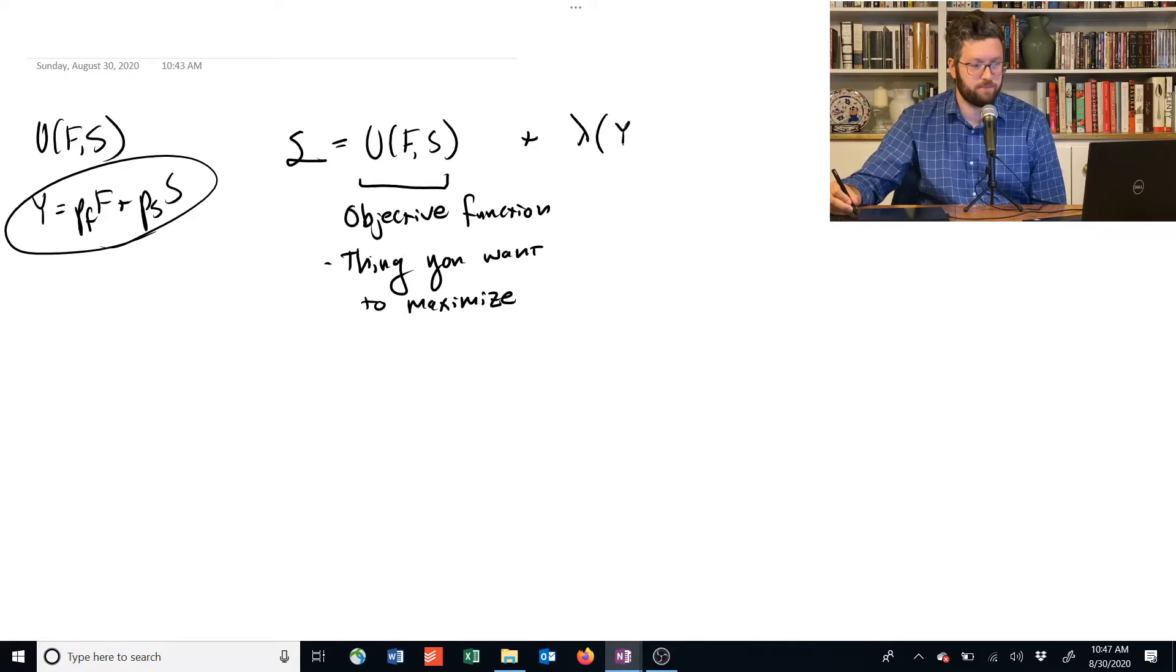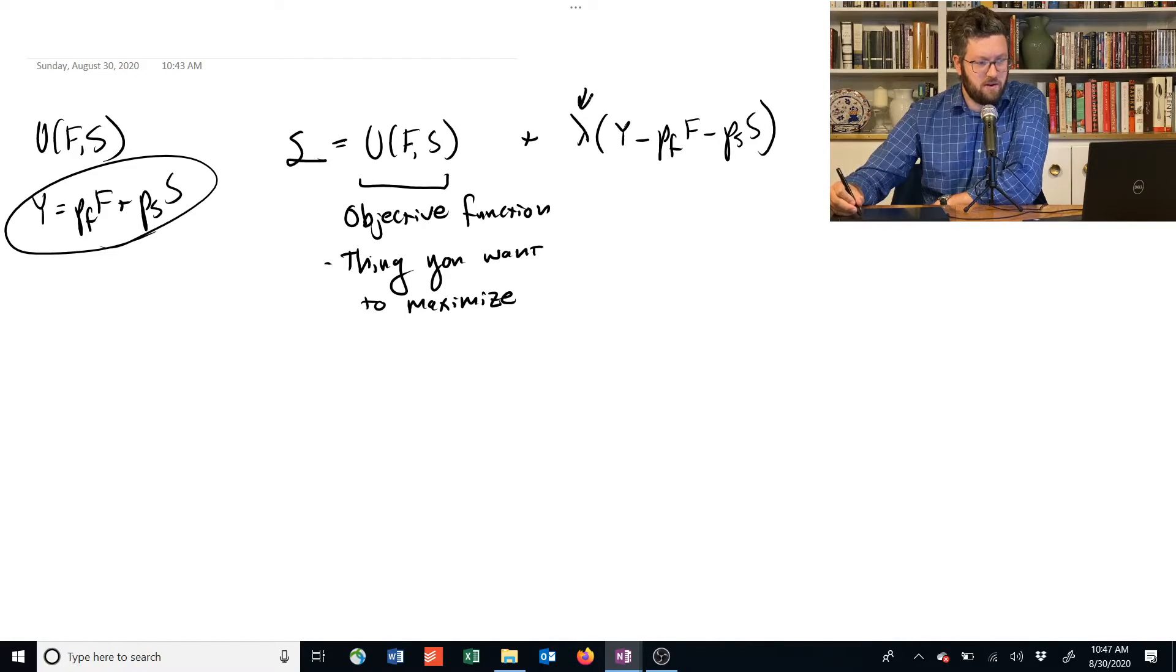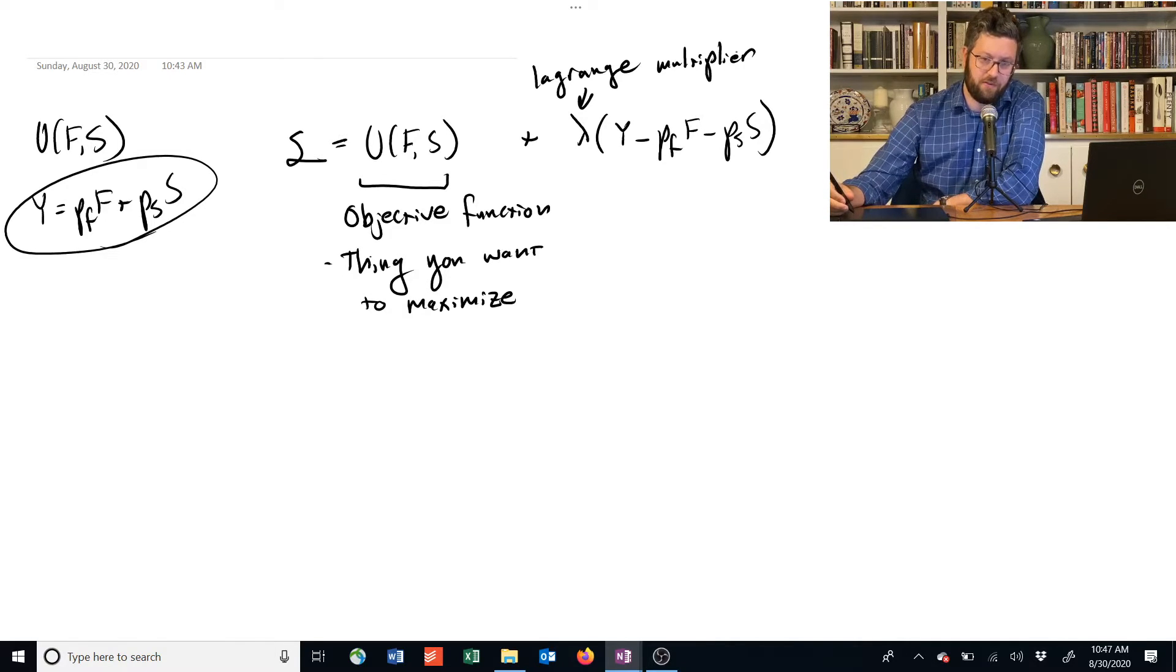So this is how we write it. This guy here is called the Lagrange multiplier. It's a variable. I chose to use the variable of the Greek letter lambda, and that's the common, that's common for this application.